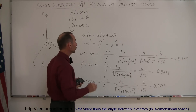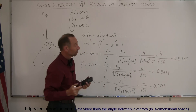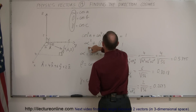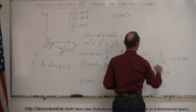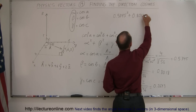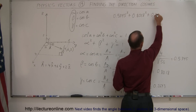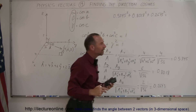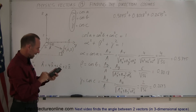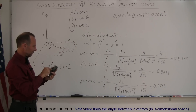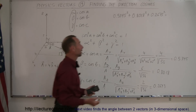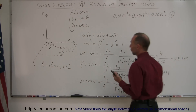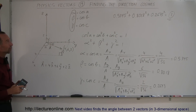To make sure I did it correctly, if I square all of those and add them together, I should get 1. So, alpha squared plus beta squared plus gamma squared equals 0.5345 squared plus 0.8018 squared plus 0.2673 squared. We get something really close to 1 — let's just call it 1. That shows that we've got the right answers, and that's how you find the direction cosines of a vector.